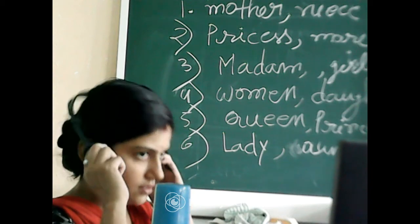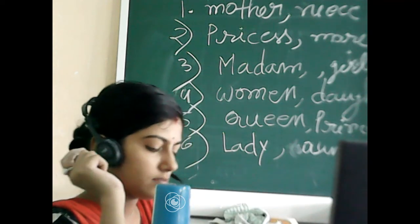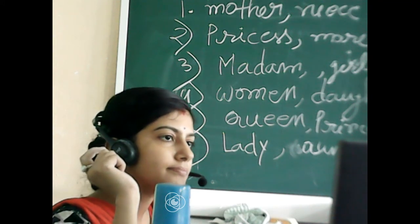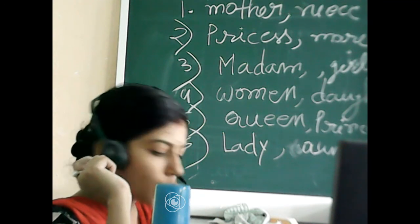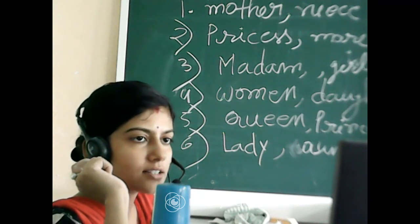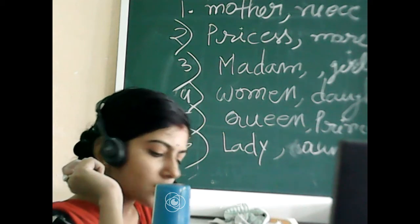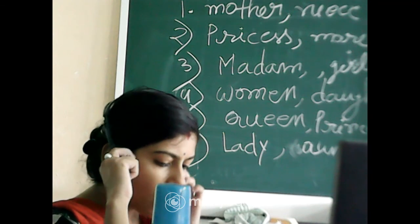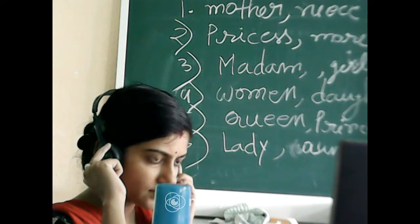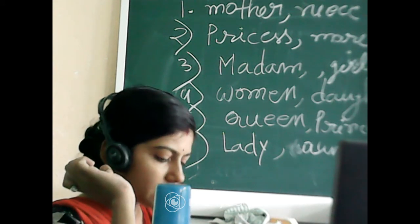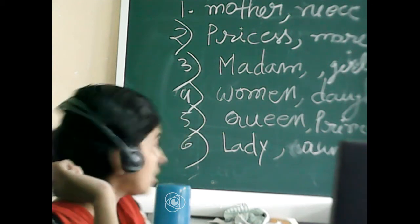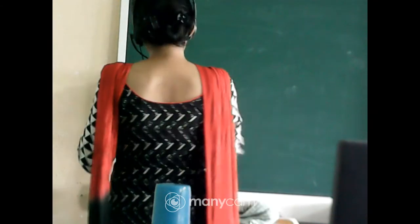All of you completed exercise F? Now come to number G. Solve the following puzzle with the help of the given clues. Note that the words to be filled in are the opposite gender of the given clues. Let's start number G on page number 31.